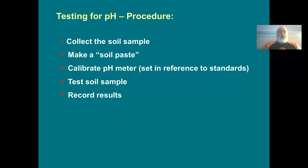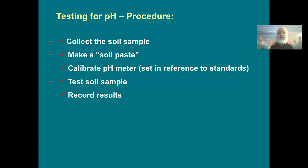Once you've taken the soil sample, if you're testing it yourself, make a paste by adding water. Some labs use a standard 100 grams of soil to 100 milliliters of water (1:1 ratio); others mix it to a slurry about the consistency of pancake batter. Let the paste sit for 20–30 minutes so the pH components can dissolve and mix into the water. While it sits, calibrate your meter, then run the sample, record your results, and that is soil pH.